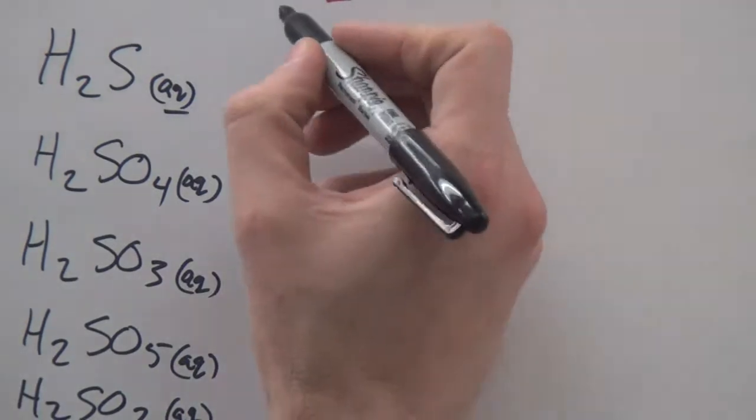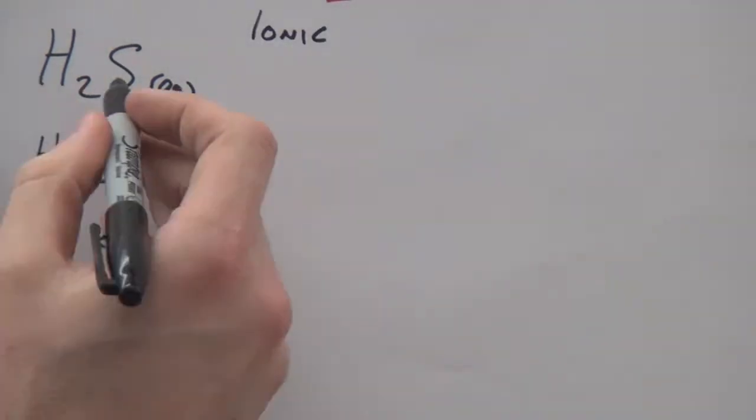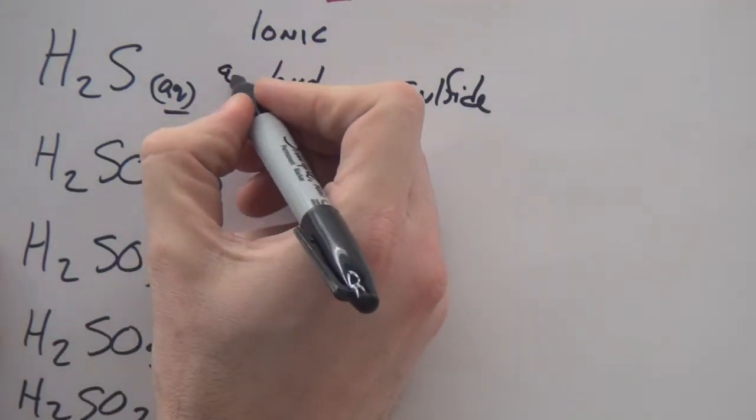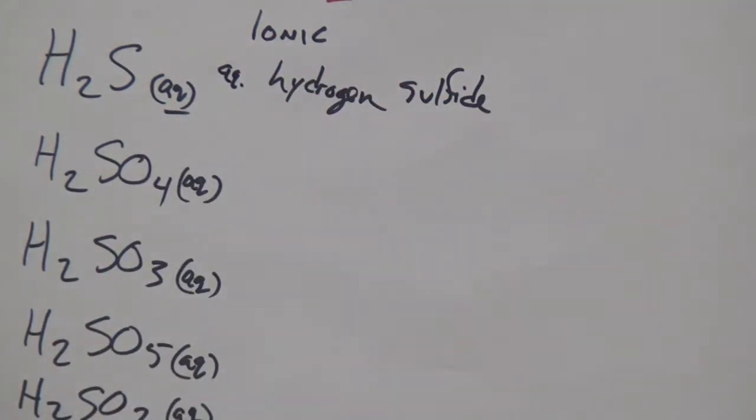You first need to give it its ionic name. So, for this one, it's hydrogen sulfide. Totally easy. Now, we could name this acid aqueous hydrogen sulfide, because remember, it's in water. We just need to write this aqueous down.